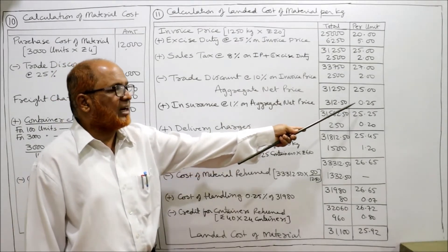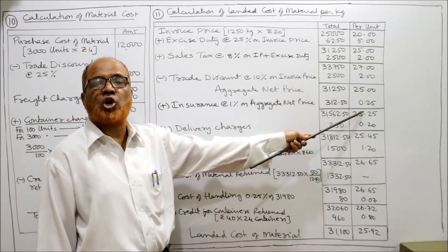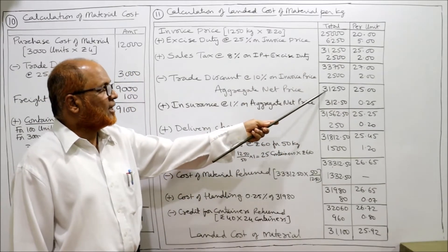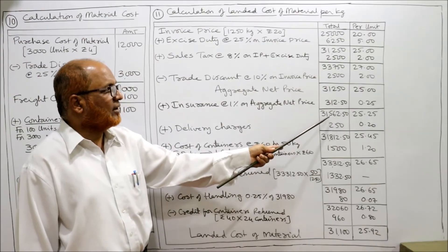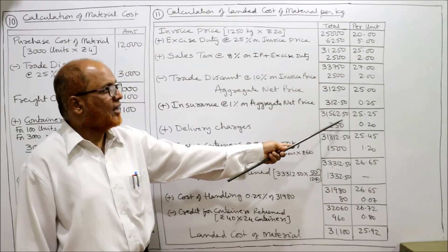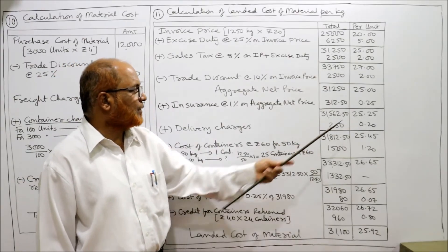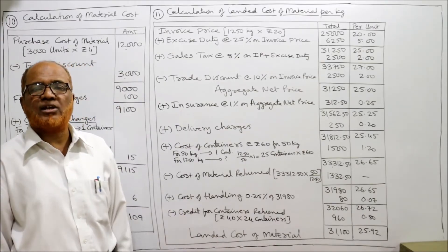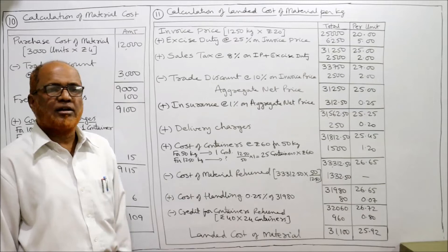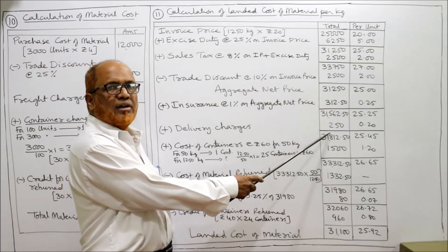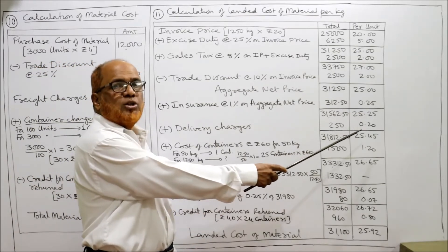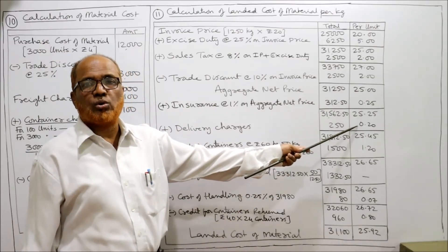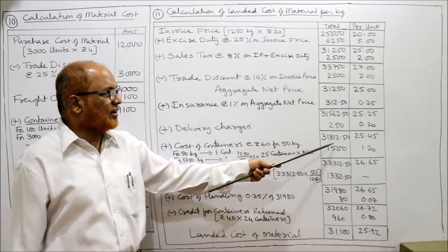Per kilogram: 312.5 ÷ 1250 = 0.25 rupees. Adding insurance: 31,250 + 312.5 = 31,562.5 rupees and 25.25 per kilogram. To this we add delivery charges of 250 rupees directly. Per kilogram: 250 ÷ 1250 = 0.20 rupees. After adding delivery charges: 31,812.5 rupees and 25.45 per kilogram.